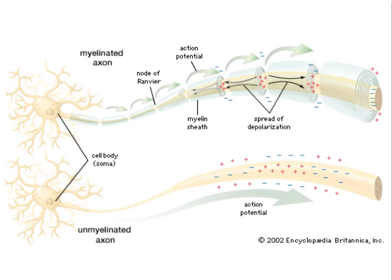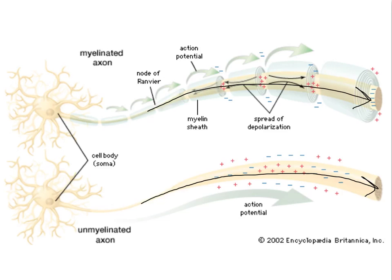Why does myelination increase the rate of signal transduction? It comes down to the number of channels opening and closing. By localizing channel activity to discrete nodes along the axon rather than along the entire unmyelinated membrane, the time required to initiate and propagate the signal is dramatically reduced. This speeds up signal propagation much, much faster than in an unmyelinated axon.